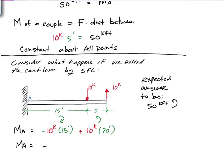MA is equal to minus 150 kip feet plus 200 kip feet is equal to 50 kip feet. And that is in a positive sense. So we can see that no matter what point we take.